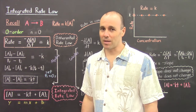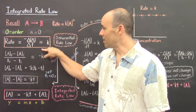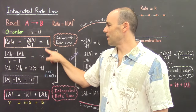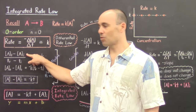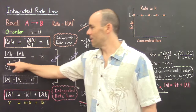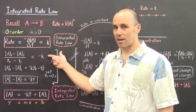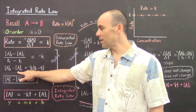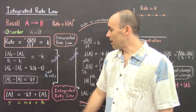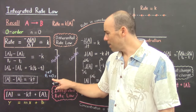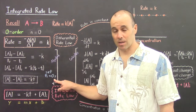Let's first go through the algebraic derivation. Starting with our differential rate law, the rate is constant. We'll move the negative symbol over to the other side, and the change in concentration over change in time becomes final minus initial concentration over final minus initial time, so that equals negative k. Now the denominator we'll move to the right side, so we're left with final minus initial concentration equals negative k times final minus initial time. At this point, we will set our initial time equal to zero seconds — at the very beginning of the reaction, we'll call that zero seconds.